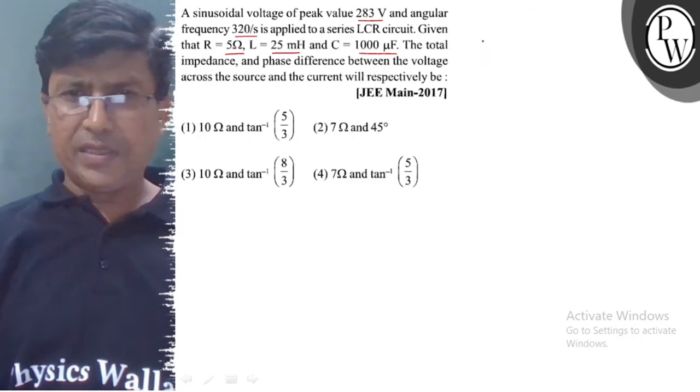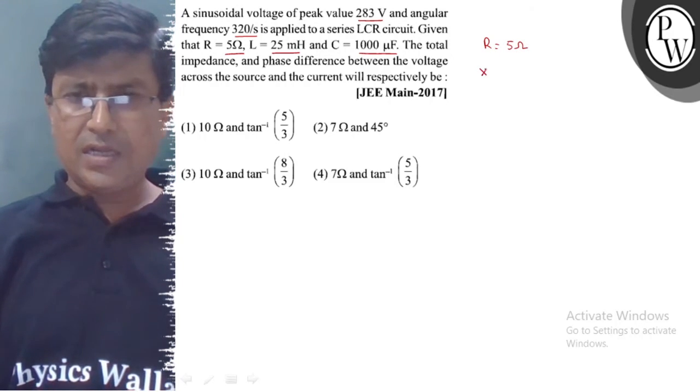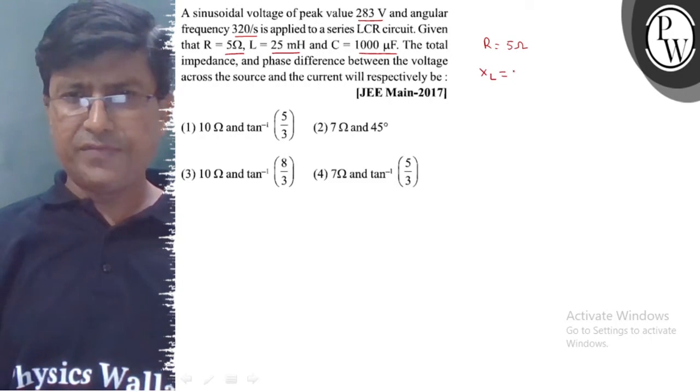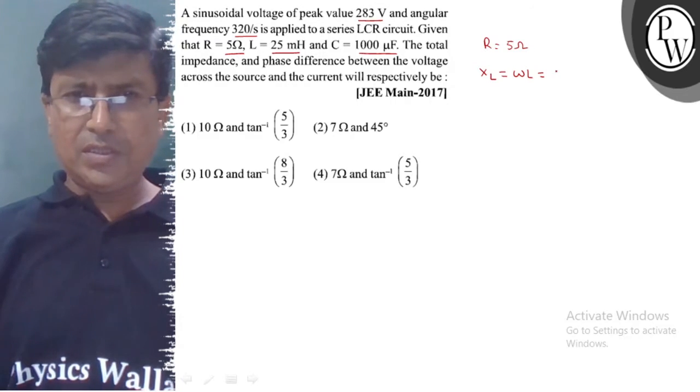First of all, let's see that R is equal to 5 ohm. To find the value of XL, we use omega L, which is 320.